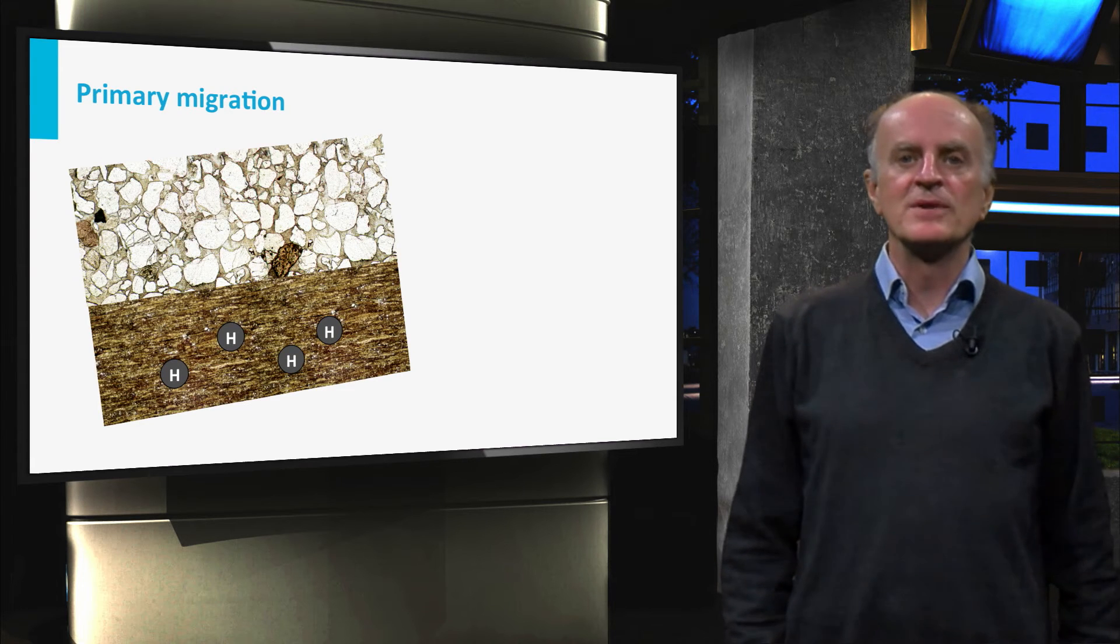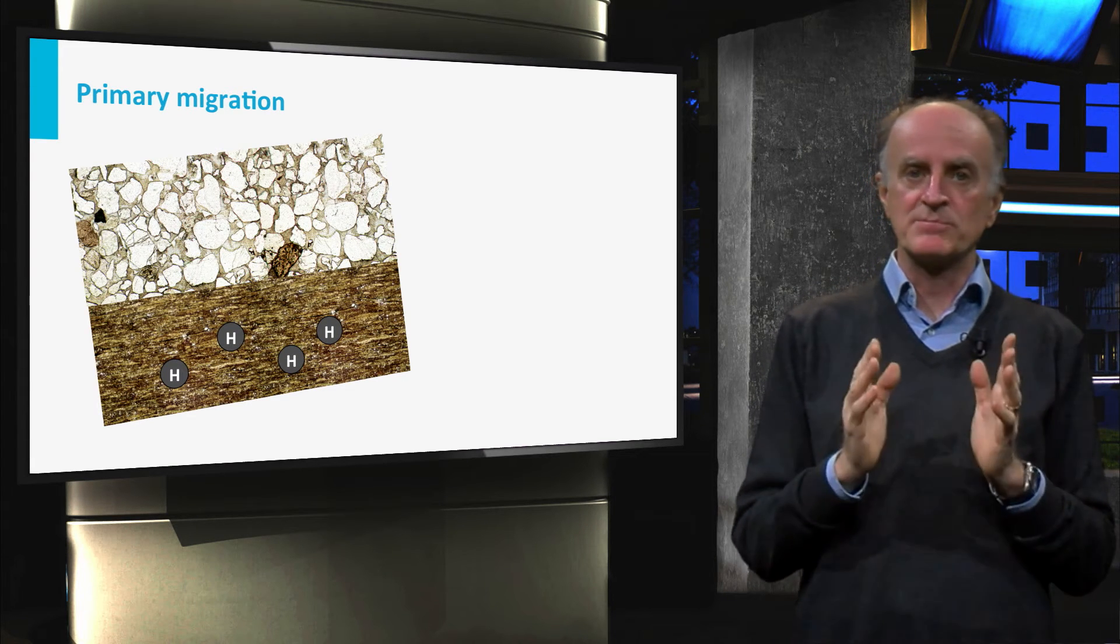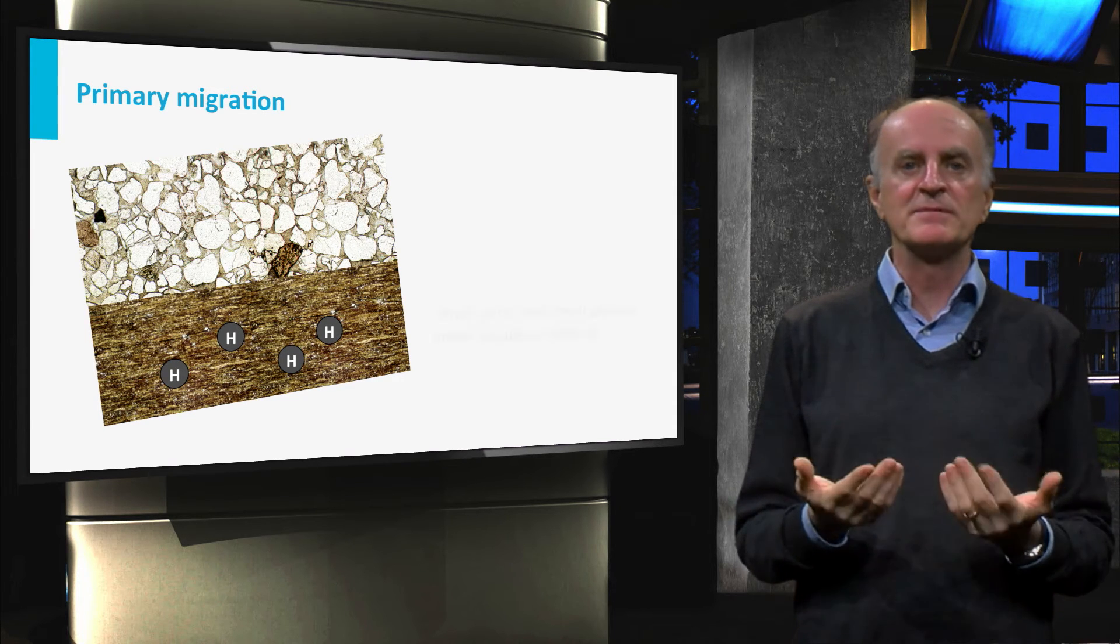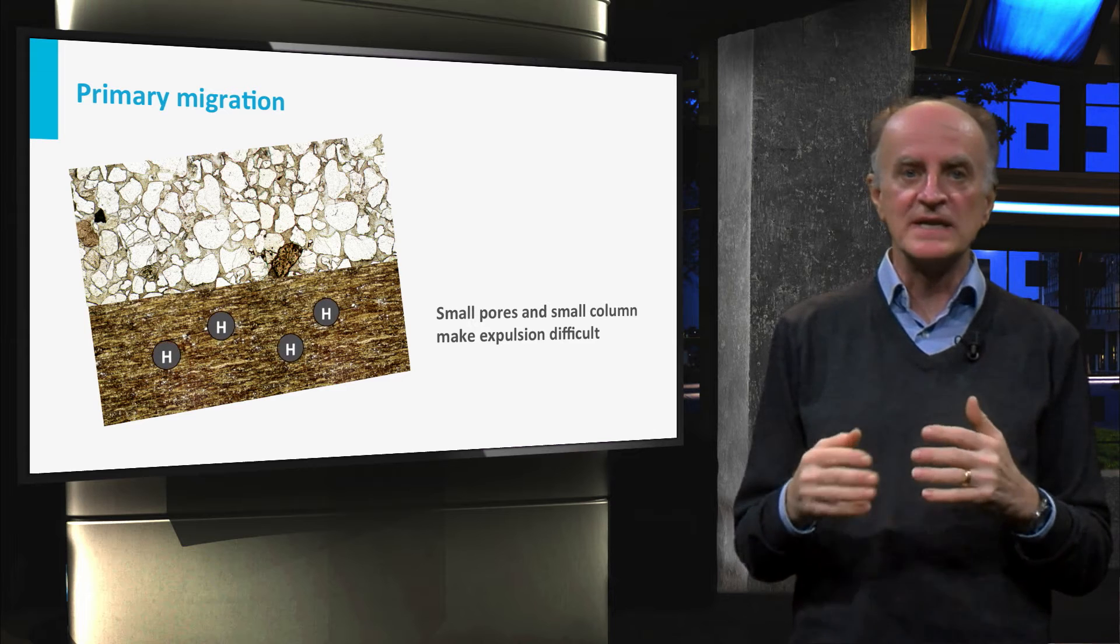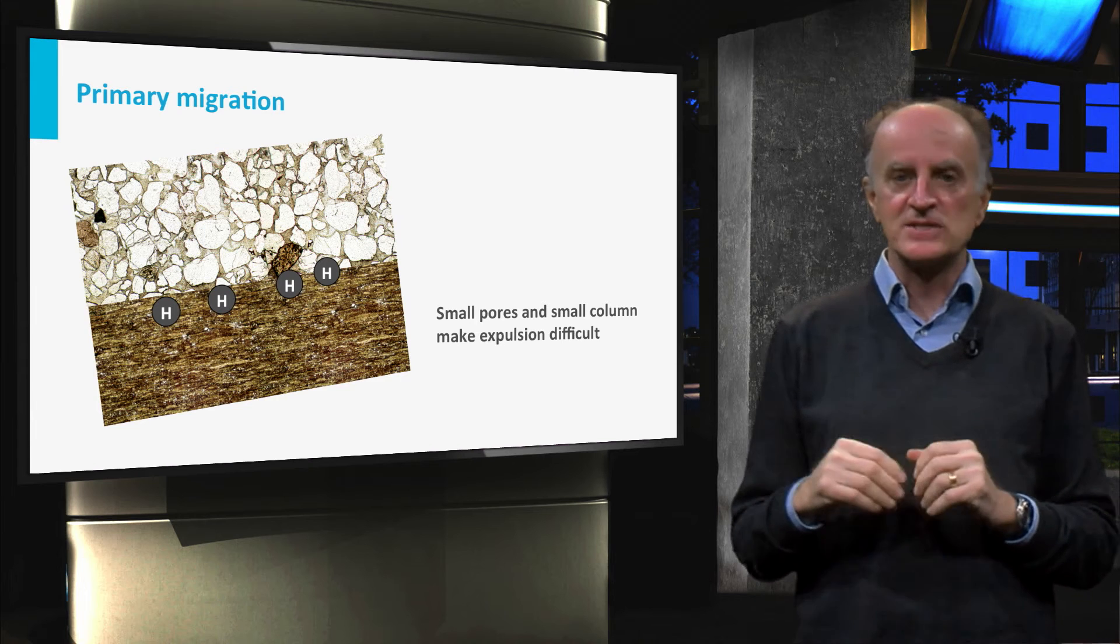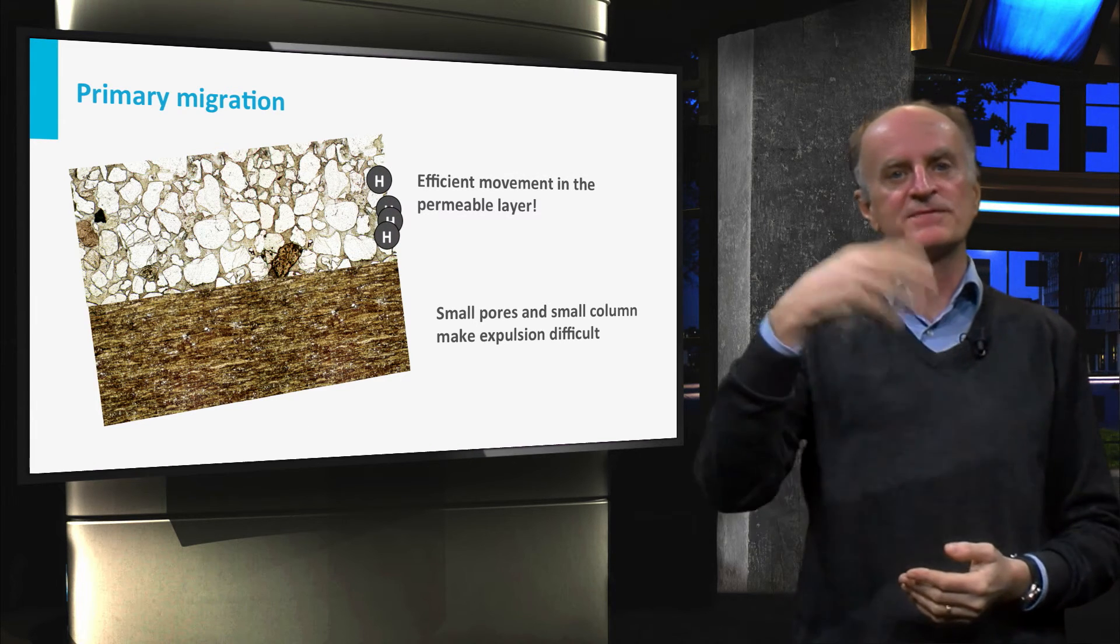The first step the hydrocarbon molecules will have to do is to get out of the source rock. We call this primary migration or expulsion. Primary migration will proceed slowly as pores are very small and the column of hydrocarbons very small. As soon as the hydrocarbons enter the permeable rocks, they will travel much faster.